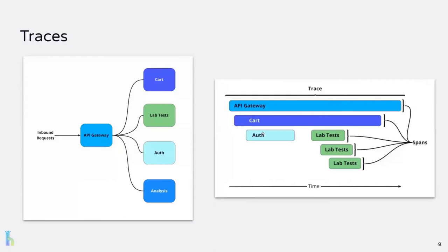Traces, on the other hand, provide a higher-level view when compared to logs. They show the path a request took through a system. For example, on the right, we see a trace visualized as a waterfall chart. A trace is composed of spans that each represent a call to a service and the span of time it takes for the request to exit. So in this case, the trace starts with the root span where the request enters the system — the API gateway. From there, we can see how subsequent requests were made and the relationship between components of the system. Traces give us a system-level view, and through them we get the context of how system components interact over the network.